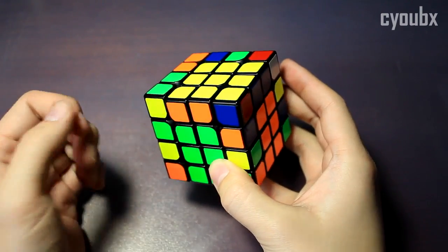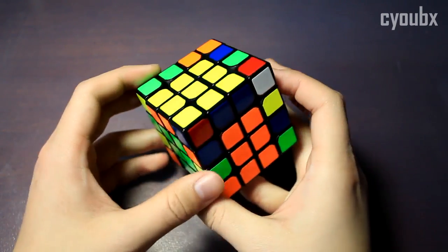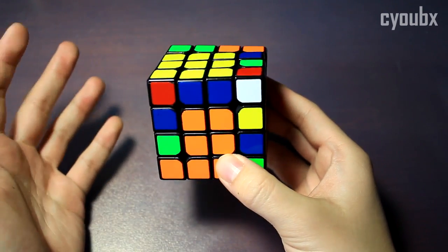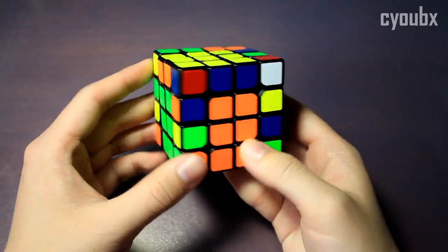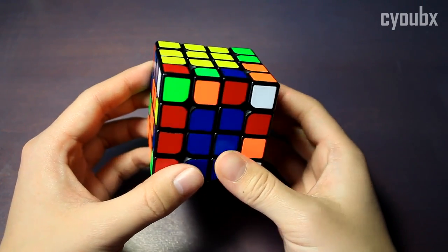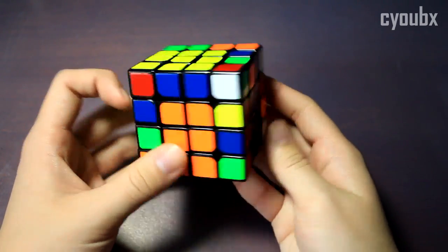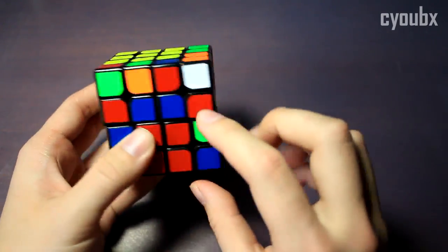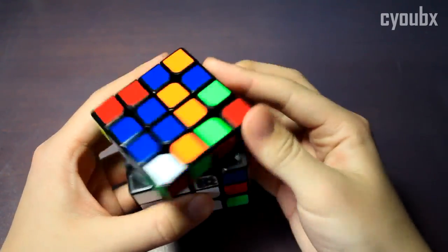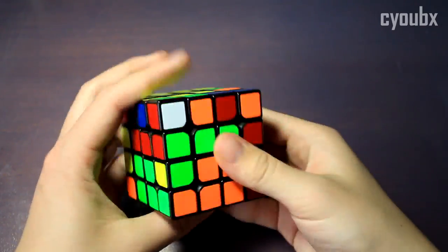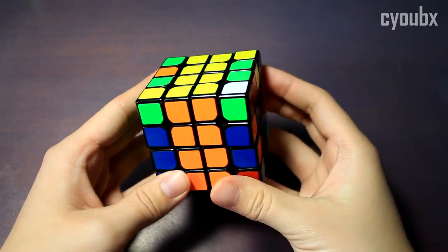You could also have something like this where you have two of them already solved. And in this case, remember I said 3-2-3 is just 3-2-2. That's exactly what I'm going to do. I'm going to slice. I'm going to pair three of them, slice back.